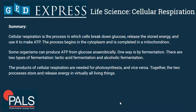Let's summarize what we have learned. Cellular respiration is the process in which cells break down glucose, release the stored energy, and use it to make ATP. The process begins in the cytoplasm with glycolysis and is completed in the mitochondria with the citric acid cycle. Some organisms can produce ATP from glucose anaerobically — one way is by fermentation. There are two types: lactic acid fermentation and alcoholic fermentation, and both have biotechnological applications.